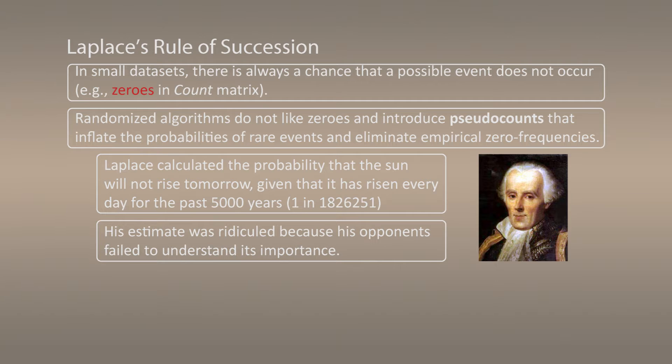Fortunately, Laplace helped us figure out how to do this. Laplace calculated the probability that the sun will not rise tomorrow, given the fact that it has risen in the last 5,000 years. Actually, this probability is roughly one in two million, according to Laplace. His estimate was ridiculed because his opponents did not realize how important this calculation was.